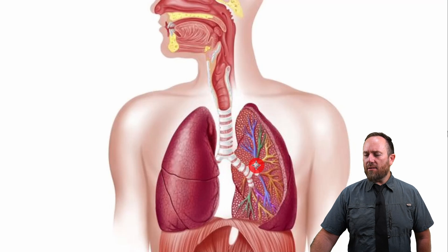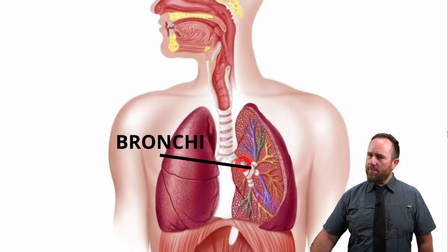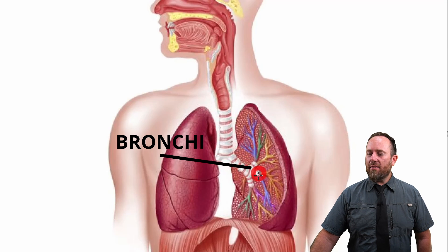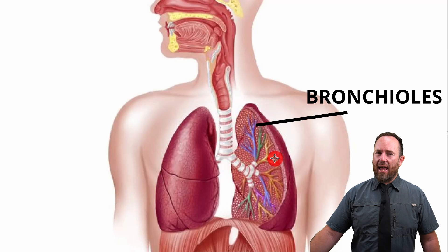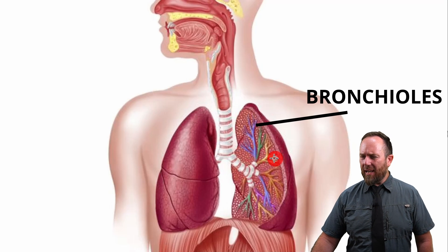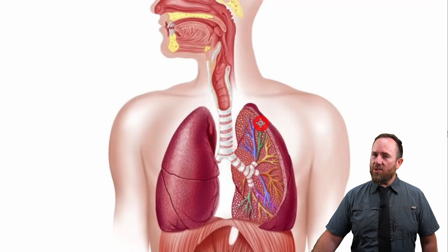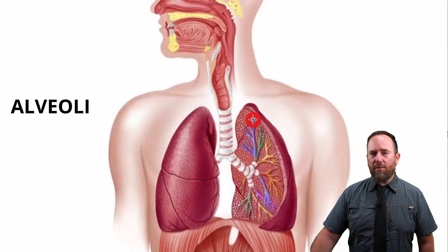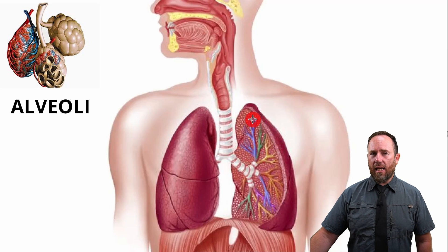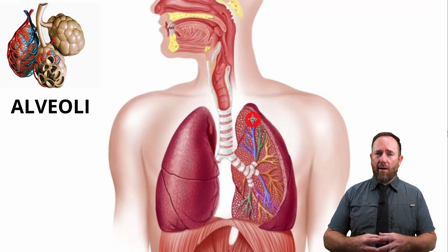Your bronchi branches out into the bronchi, and then even further — going deeper — your bronchi then branch into your bronchioli. At the tip of every bronchioli, those little dots you see right there, that is where the magic happens. Those little bubbles are called the alveoli — a little bunch of bubbles that looks like a bunch of grapes.